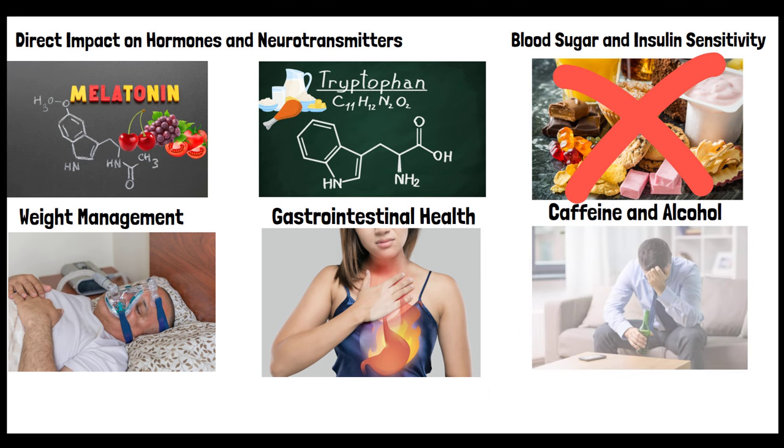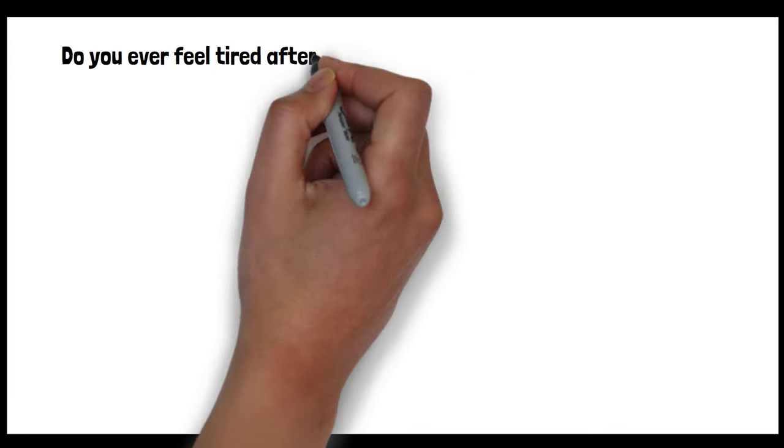Caffeine and alcohol. Consuming caffeine and alcohol, especially close to bedtime, can interfere with the sleep cycle. While alcohol may make you drowsy, it often disrupts sleep during the second half of the night.